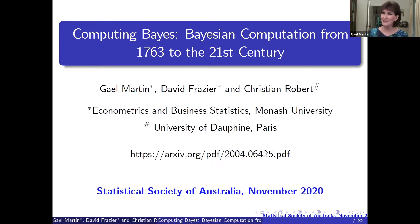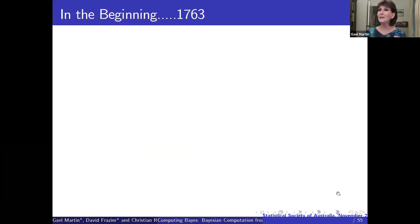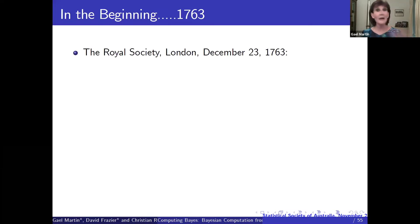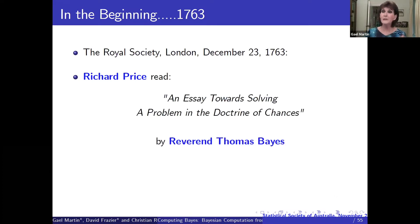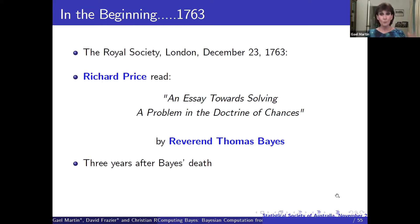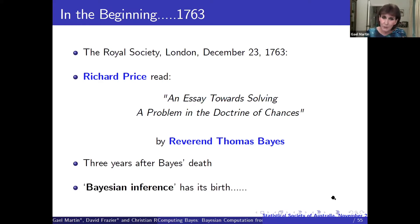We need to start our journey at the very beginning — at what was undoubtedly a cold December day in London, 1763, when one Richard Price, a fellow of the Royal Society, presented to the Society an as yet unpublished paper by his colleague, the Reverend Thomas Bayes, who had died a couple of years prior. This essay — 'An Essay towards Solving a Problem in the Doctrine of Chances' — had its first public airing, and with that, what eventually became known as Bayesian inference had its beginning.